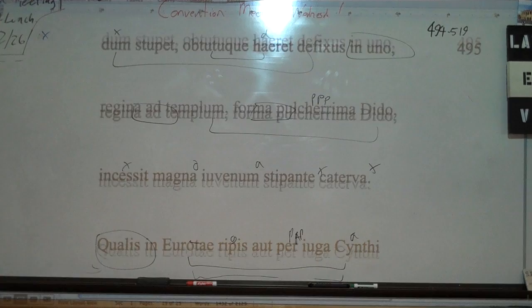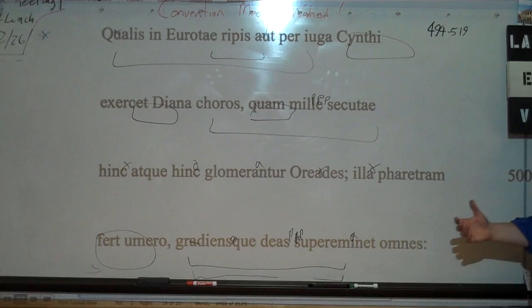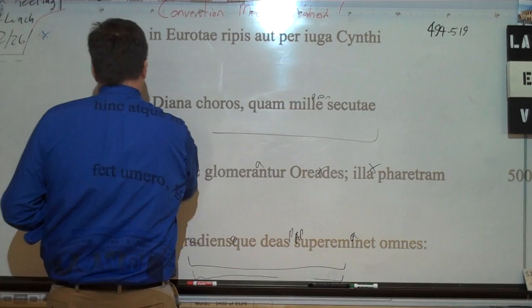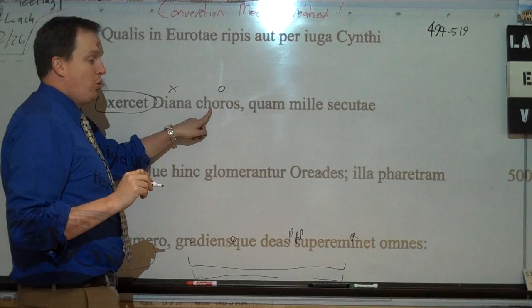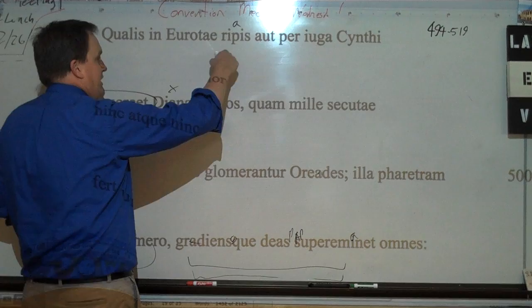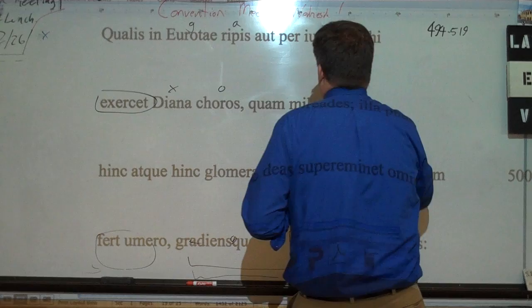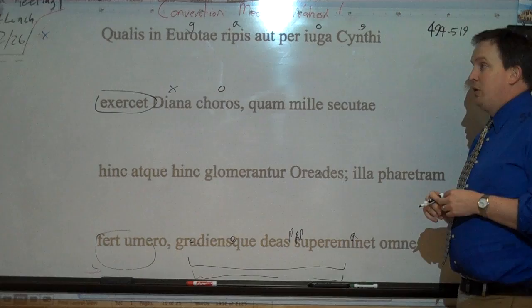And then we have a simile comparing Dido to Diana. And we have Qualis, such, and we can put as in, such as Diana exercens, exercens, trains. So such as Diana trains her bands, her chorus, choros. This is a nice Greek-Latin word, so it has the idea of chorus. So just as Diana trains her band on the banks, repa, think of riparian in English, on the banks of the Eurotas River, through or through the ridges of the Cynthus. Now this refers to a mountain, or not really a mountain, but a hill in or on the island of Delos, where Apollo and Diana were born.